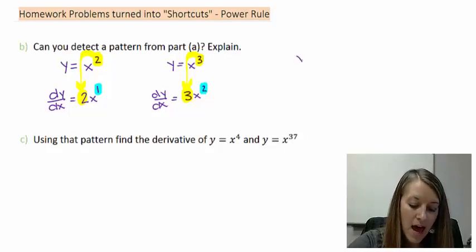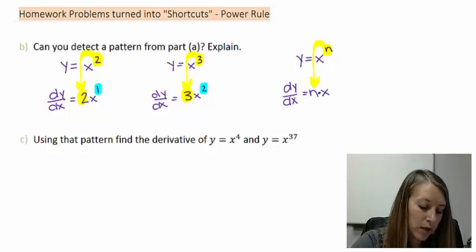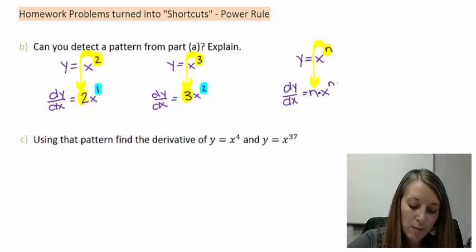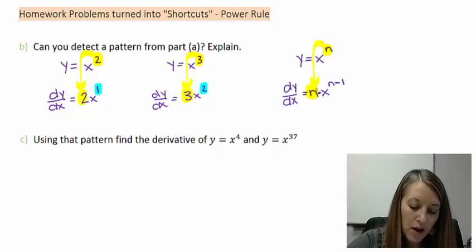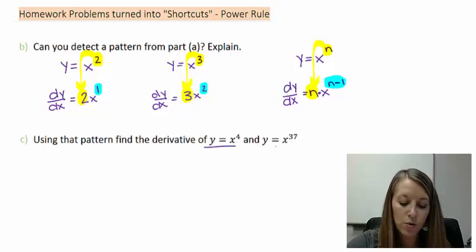So, if we had y equals x to the nth power, and so this is what's going to give us the pattern, we take our exponent, it becomes a coefficient down in front, so this is n now times x, and we take our new exponent, and it becomes one less than our old exponent. So, our coefficient in front came from our old exponent, and our new power came from one less of our old power. So, now from this pattern, we should be able to figure out the derivatives of these two here pretty easily.